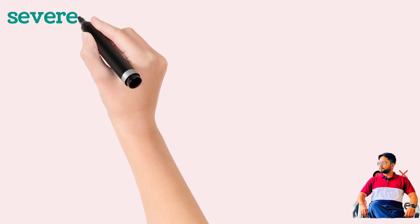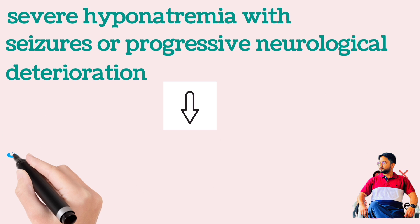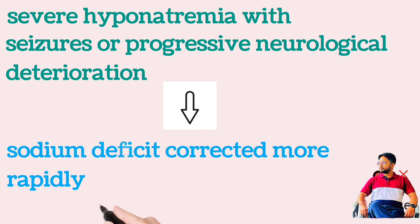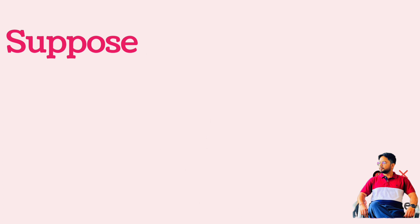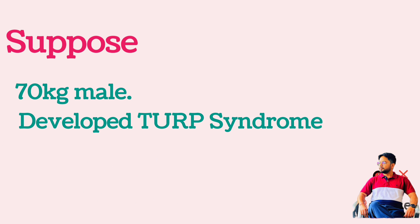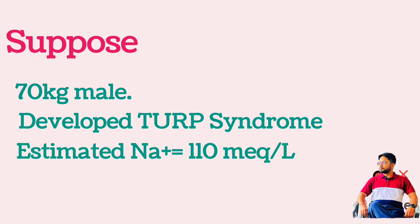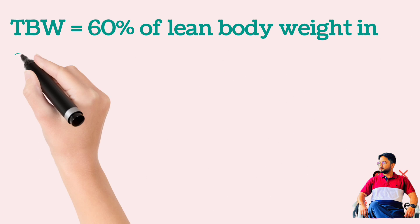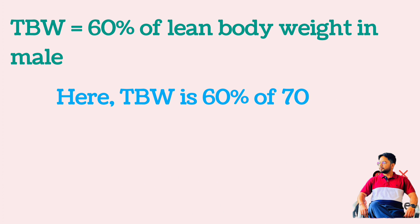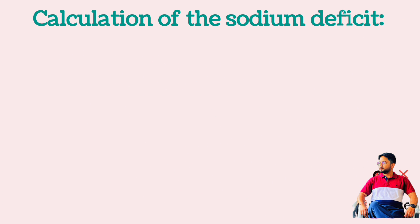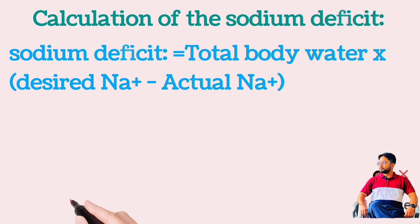In situations of significant hyponatremia associated with seizures or progressive neurological deterioration, it may be necessary to correct the sodium deficit more rapidly at 3 mEq per litre per hour. Discontinue hypertonic saline when serum sodium concentration exceeds 120 mEq per litre. For example, assume a 70 kg man who has developed TURP syndrome with a serum sodium concentration of 110 mEq per litre, planned for correction with 3% NaCl. Total body water = 60% × 70 kg = 42 litres. Sodium deficit = total body water × (desired sodium − observed sodium).